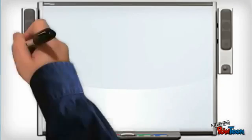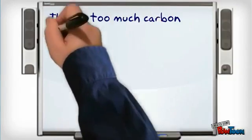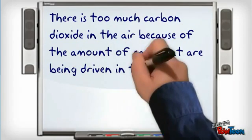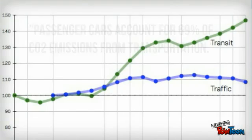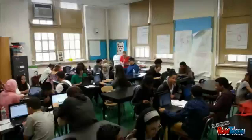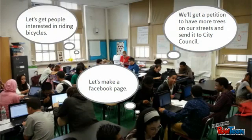For example, Cindy's team observed that there is too much carbon dioxide in the air because of the amount of cars being driven in the city. They cited evidence from primary sources and found that passenger cars account for 69% of CO2 emissions from transportation. When Cindy's team developed their community action plan, they accepted other group members who were equally passionate about the issue. Other students broke into groups whose issues included waste disposal, green space, and energy.